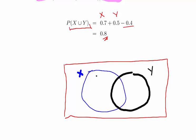Everything inside the circle X should total 0.7. But we know that there's 0.4 in here, the intersection, and we know that means there's 0.3 here and also that there's 0.1 here.